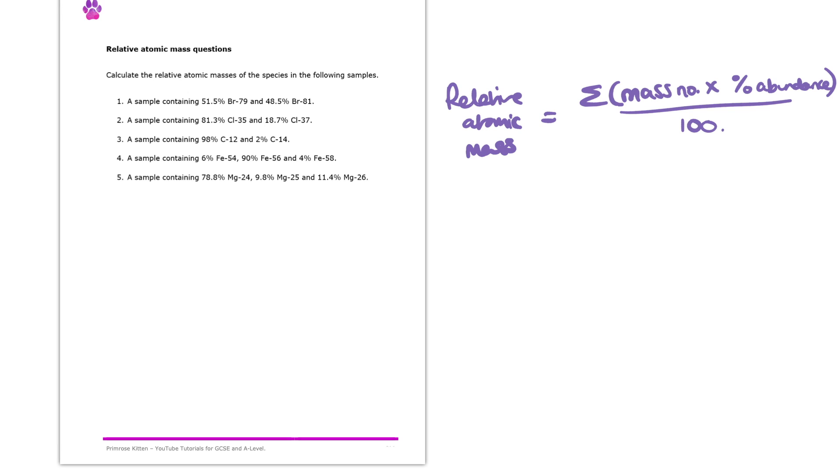Let's have a look here at question one. So in question one, we're told that we have 51.5% of bromine-79, and 48.5% of bromine-81. So in this case,